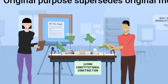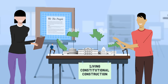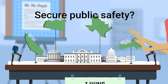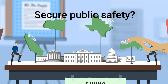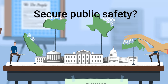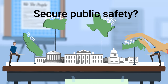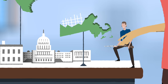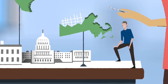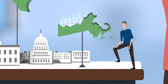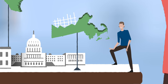For example, if the original purpose of the text of the Second Amendment was somehow to secure public safety, they will say: well, if now we think that public safety requires that nobody have a gun, then they would claim that's consistent with the original purpose of the Second Amendment.